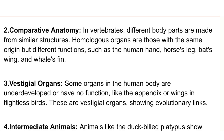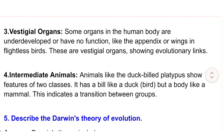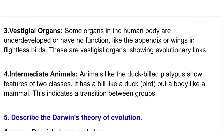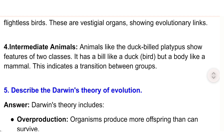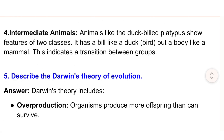3) Vestigial organs — some organs in the human body are underdeveloped or have no function, like the appendix or wings in flightless birds. These are vestigial organs showing evolutionary links.